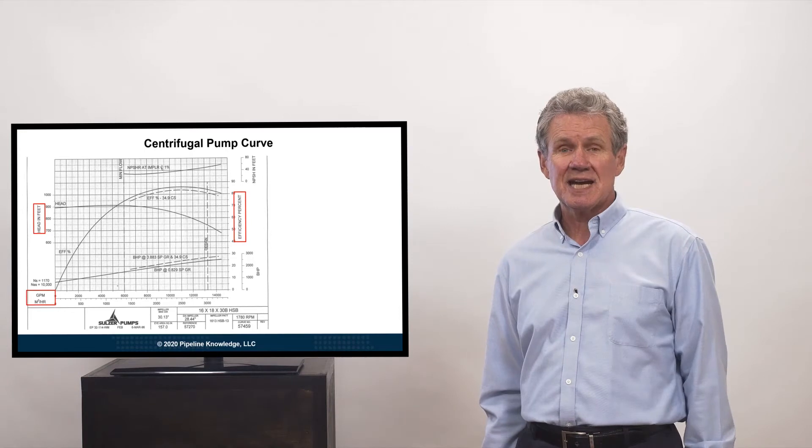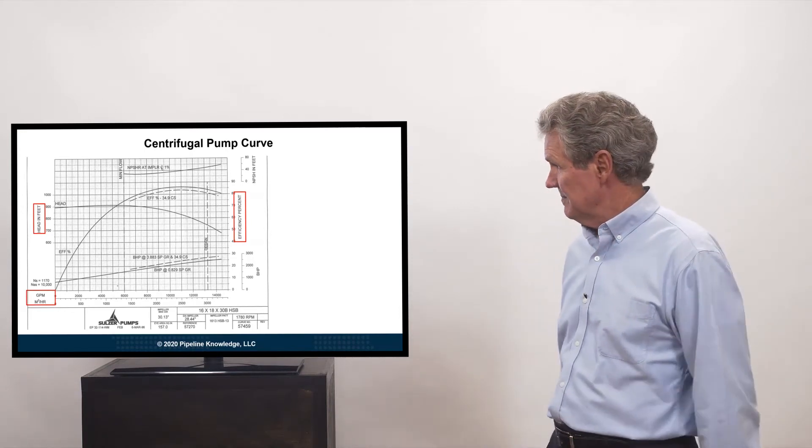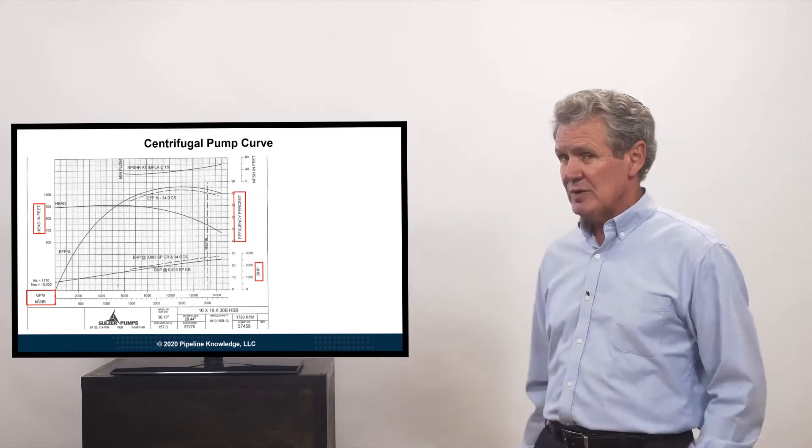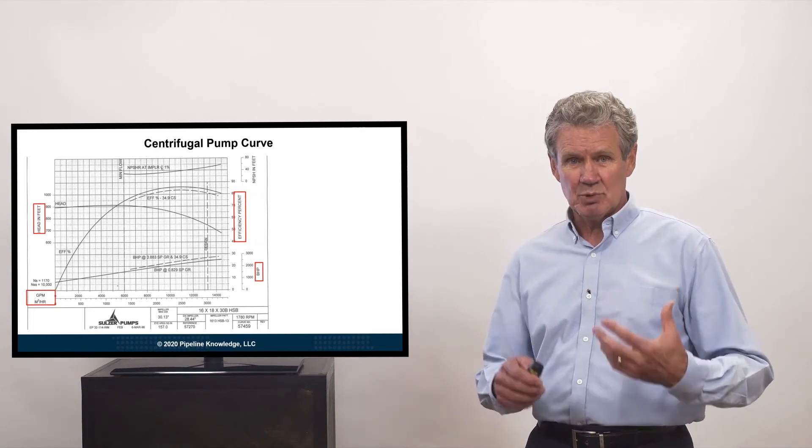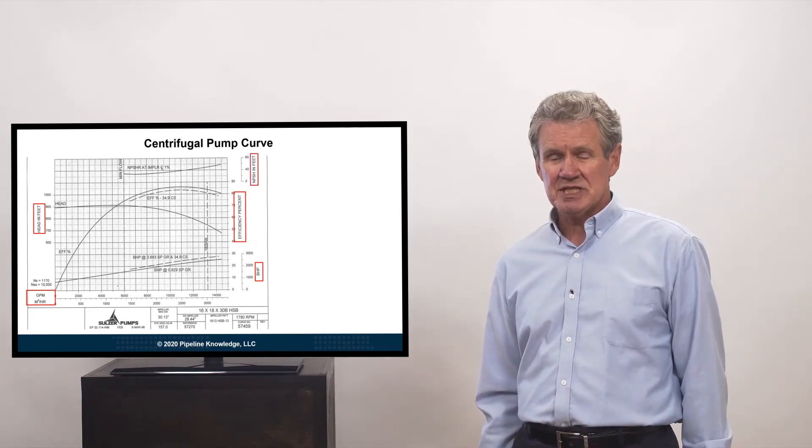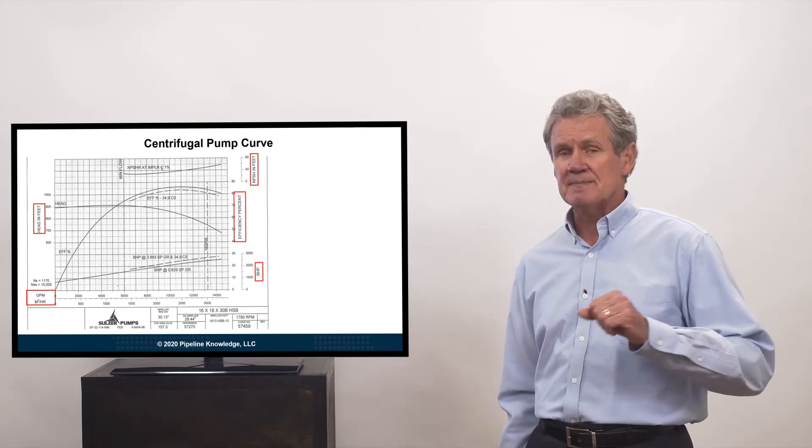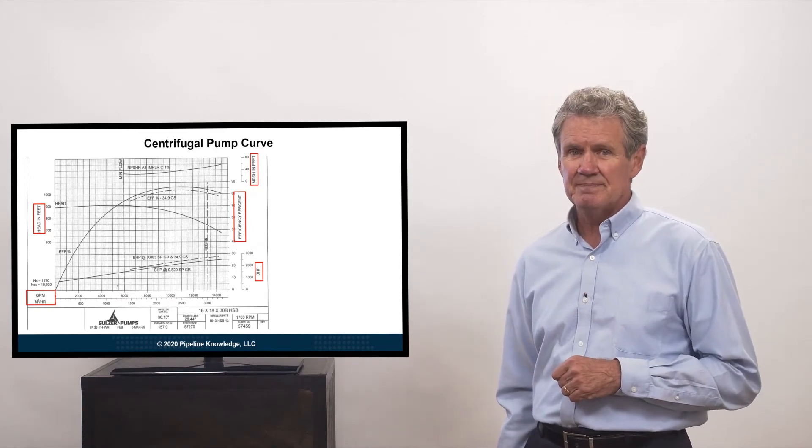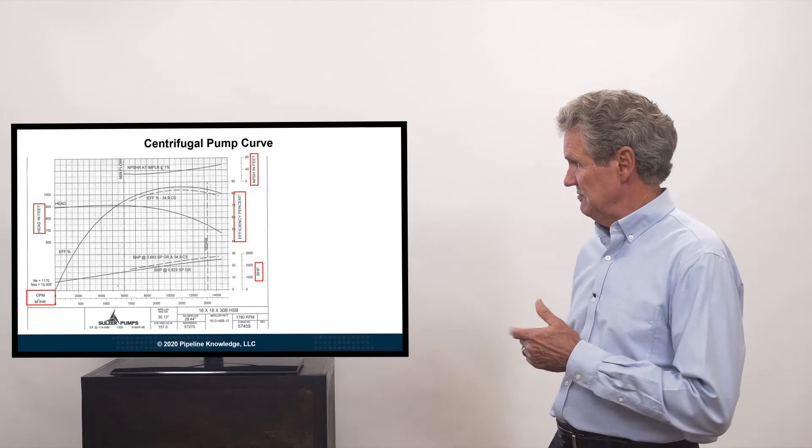Over here, on the right-hand side, we have the efficiency. Down here, below efficiency, we have the brake horsepower. And then, finally, we have the net positive suction head in feet. It could be in psi as well. A lot of times we do it, though, in feet.